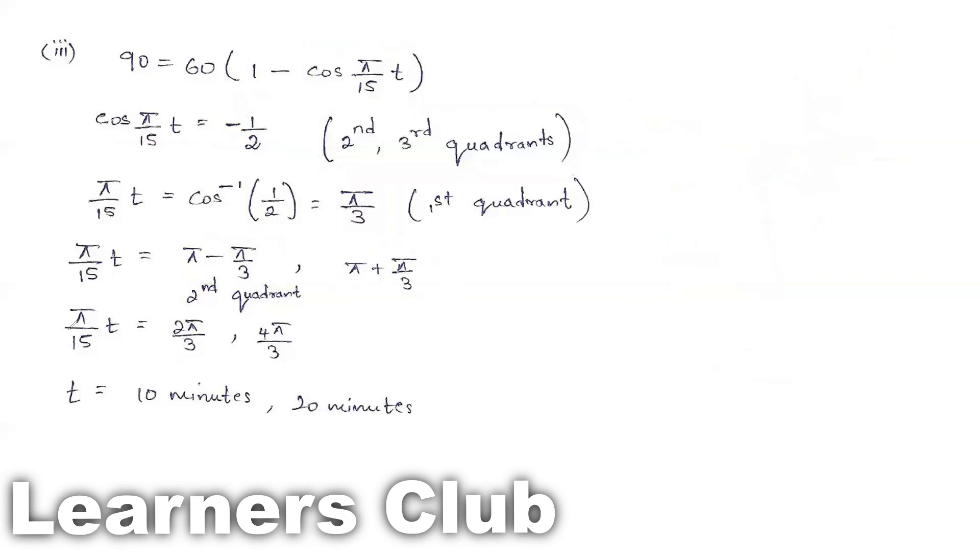Now on simplifying, I can cancel π, all equivalent values. What is t? 15 into 2 by 3, that will give me 10 minutes. So you can say when the height h is 90, you can have time 10 minutes, 20 minutes.